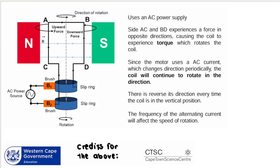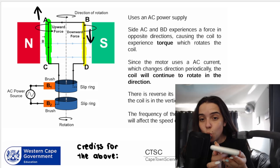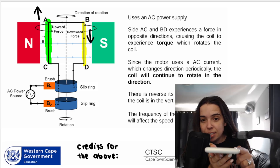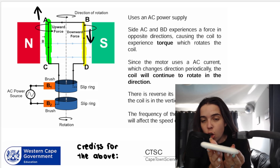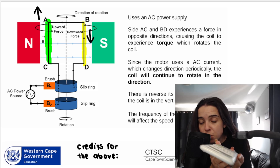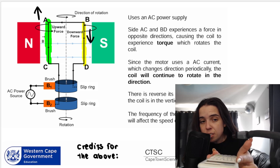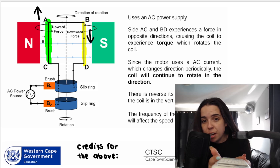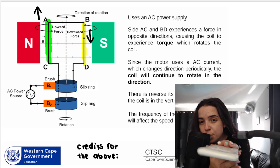When they refer to sides AC of the coil, they mean the side over here — AC. And then BD refers to the side over here — BD. These sides experience forces in the opposite direction. That makes sense because if AC gets an upward force and BD goes down, that enables the coil to spin. You can see this side goes up and this side goes down, and that enables it to spin.